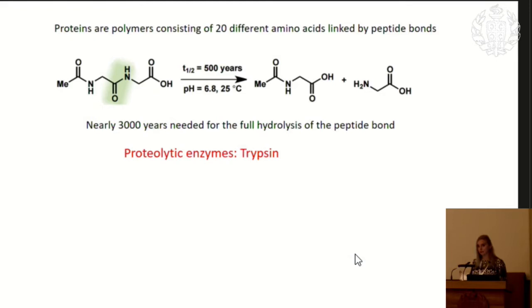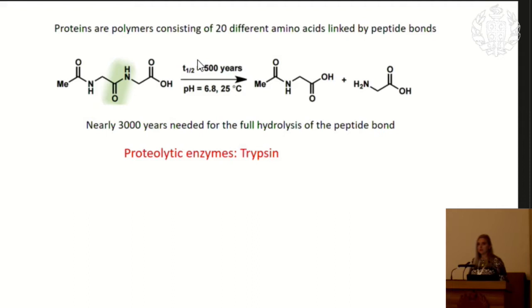Proteins are polymers consisting of 20 different amino acids linked by peptide or amide bonds, highlighted here in green. To fragment a protein, you must cleave this peptide bond — but this is an extremely difficult chemical process. Under physiological conditions, at room temperature and pH 7, the half-life for this reaction is about 500 years, meaning it takes thousands of years without any catalyst to break this bond.